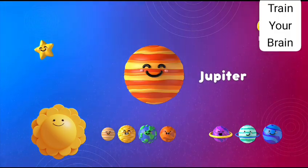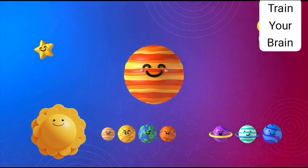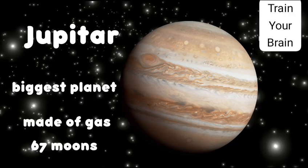Jupiter is the biggest planet. Jupiter is made of gas, and it's so big that you could fit more than a thousand Earths inside it. It has seven moons.